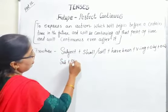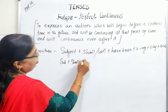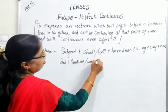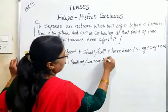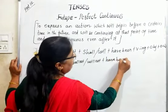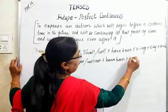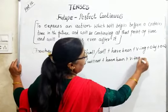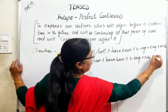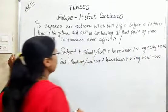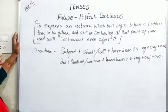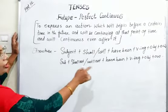Negative करना है तो: Subject + shall not / will not + have been + verb(ing) + object + other words. यह sentence का हमारा structure बनता है — shall not have been, will not have been।